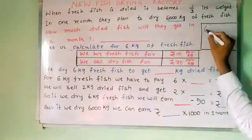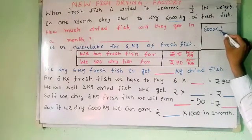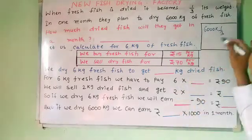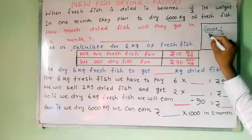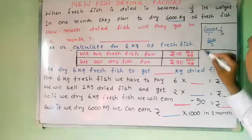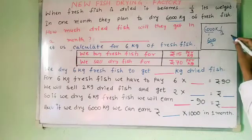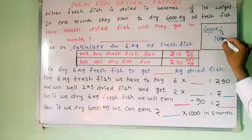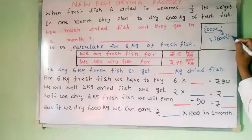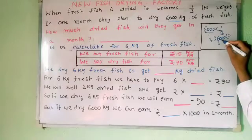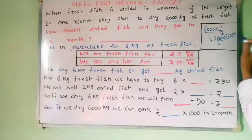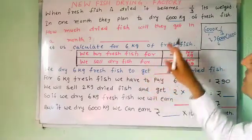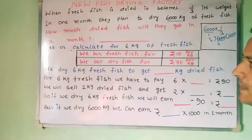So 6000 kg will become one third. What is one third of 6000? So 6000 is made into three parts and only one part is taken — that is 6000 multiplied by 1/3, which is 6000 divided by 3. To divide 6000 by 3: 3 twos are 6, and there are three zeros, so three zeros come here.